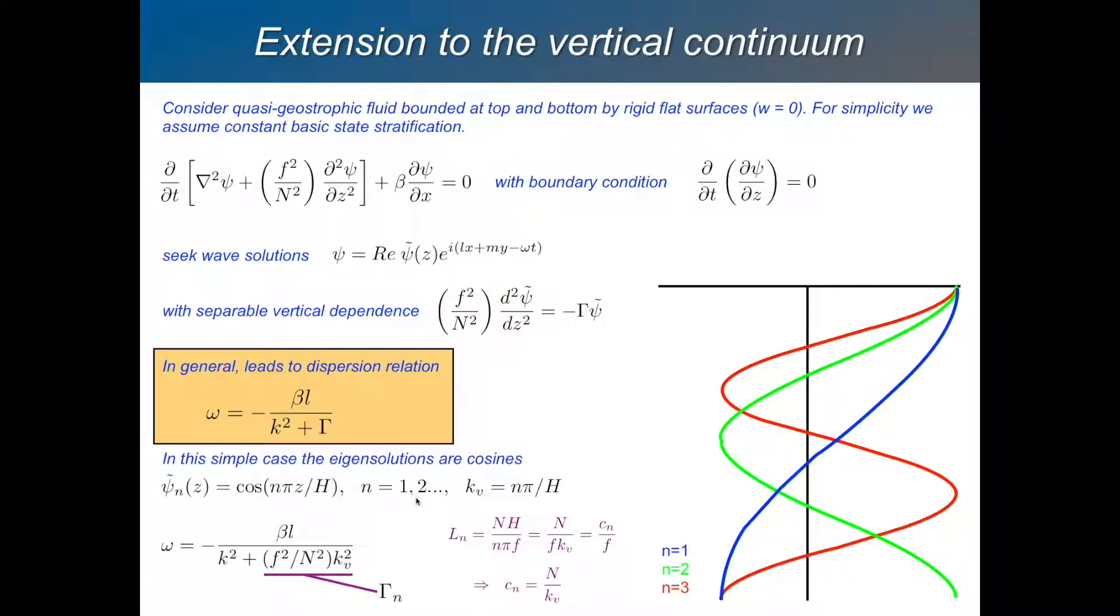N equals one, two, three. And for each mode, we'll have a different value of gamma. And this is our dispersion relation. Omega is minus beta L over K squared. K squared is just L squared plus N squared, plus gamma. So it's a baroclinic Rossby wave dispersion relation. Plus gamma is variable.